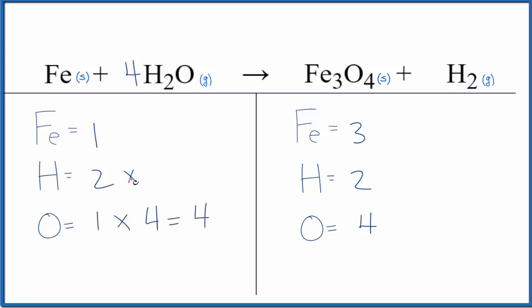Two times four, that gives us eight. But we can fix that easily. We just put a coefficient of four in front of the H2. Two times four, that gives us eight. And then for the iron, coefficient of three, one times three, that gives us three.